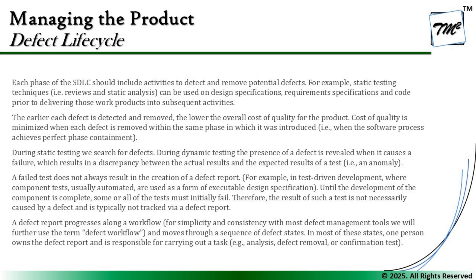Before that let's set up some context. It's not necessary that a defect is only identified during dynamic testing. A defect can be identified anywhere in the life cycle, right from the beginning — that is static testing techniques — where you review the requirements, the design, or the code. The earlier each defect is detected and removed, the lower the cost of quality, because it's cheaper to identify and remove defects early in the life cycle compared to later.